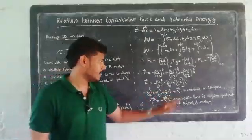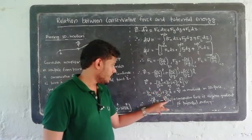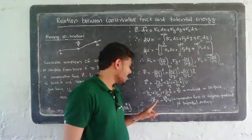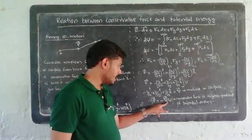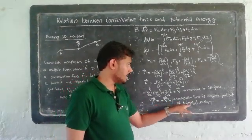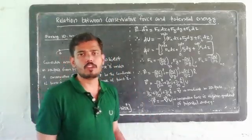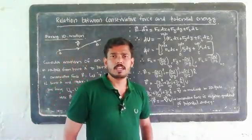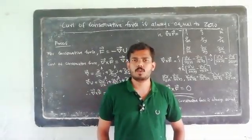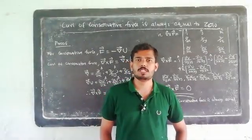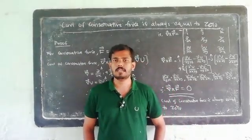In three-dimensional space, the gradient equals minus del U, so conservative force is equal to negative gradient of potential energy in three-dimensional space. Conservative force is always equal to negative gradient of potential energy. The curl of conservative force is always equal to zero.